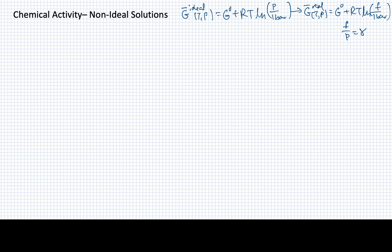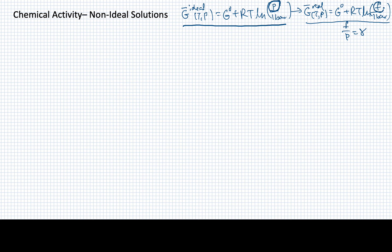We've seen that one way we can treat non-ideal gases is by starting with some of the expressions we develop for ideal gases and then simply substituting this new function, the fugacity, in for the pressure. This is the result we got in the previous video, to allow you to see the relationship between our expression for an ideal gas and the expression for a real gas, where really the only difference is that we have substituted fugacity for the pressure.